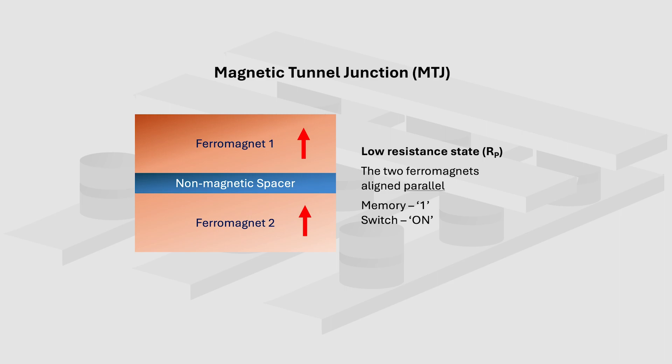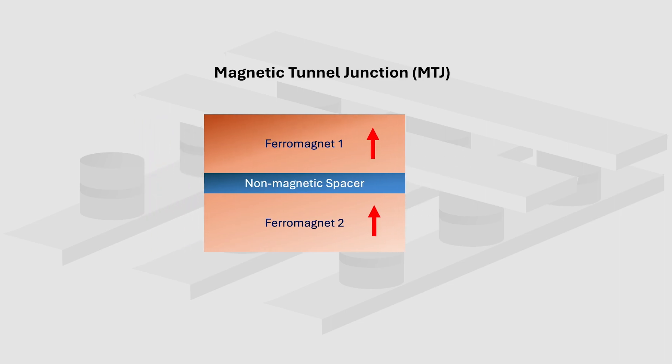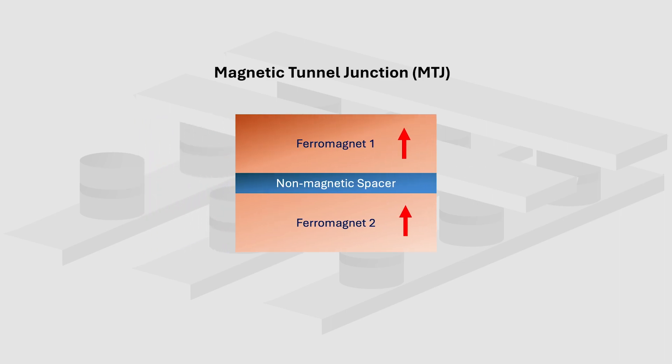Thus, computation is reduced to toggling the MTJ between parallel and anti-parallel state. To do this, one of the ferromagnetic layers is kept fixed, denoted here by a thicker arrow. The layer can then be toggled between up and down to achieve the parallel and anti-parallel states.